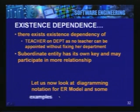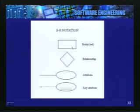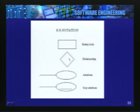Let us now look at the diagramming notation for the ER model. An entity is represented by a rectangle with the entity name written inside. A relationship is represented by a diamond. These notations are essentially for entity sets and relationship sets. An attribute is written in a small circle connected either to an entity or to a relationship, because attributes do not exist independently — they are associated with an entity or a relationship. The key attribute may be underlined.